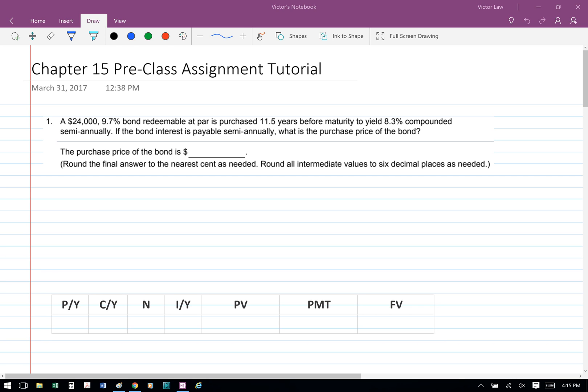Business Math Chapter 15 Preclass Assignment Tutorial Question 1. A $24,000, 9.7% bond redeemable at par is purchased 11.5 years before maturity to yield 8.3% compounded semi-annually. If the bond interest is payable semi-annually, what is the purchase price of the bond?